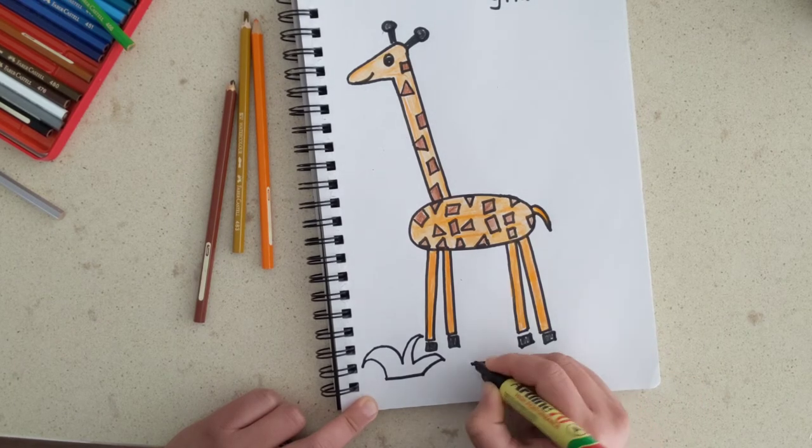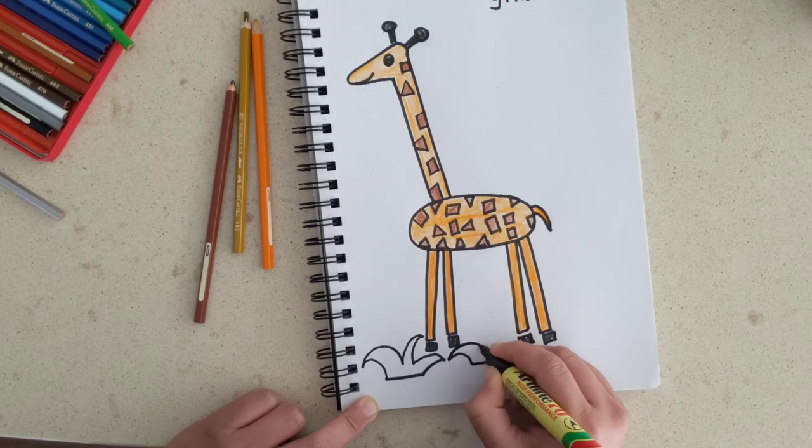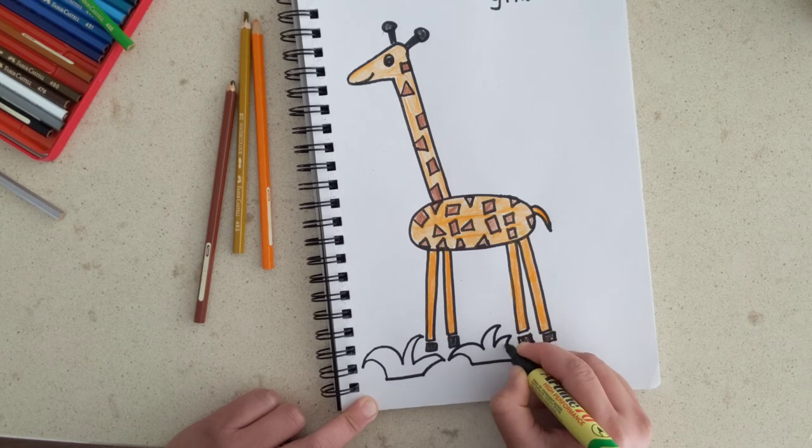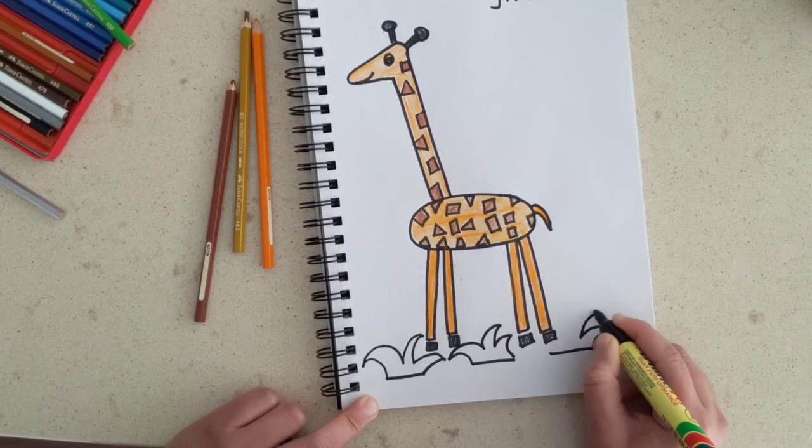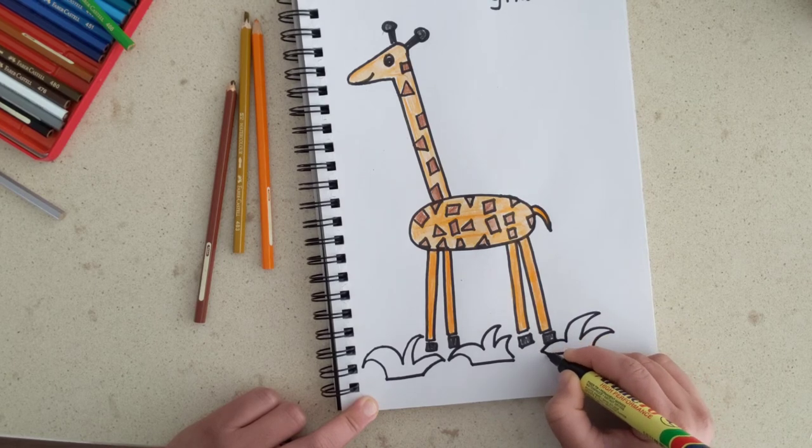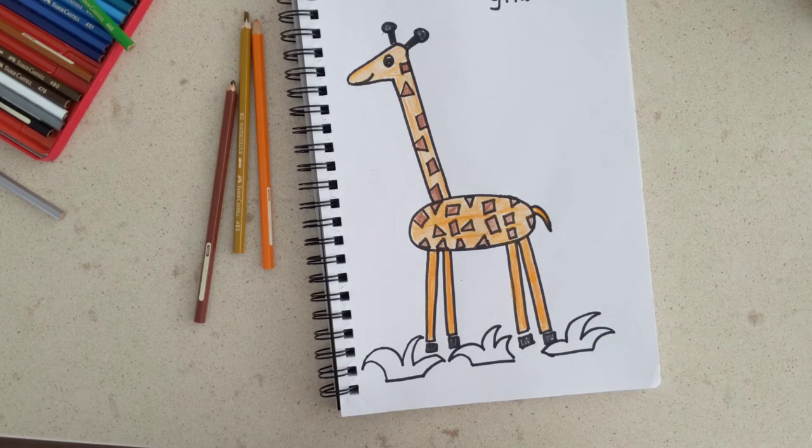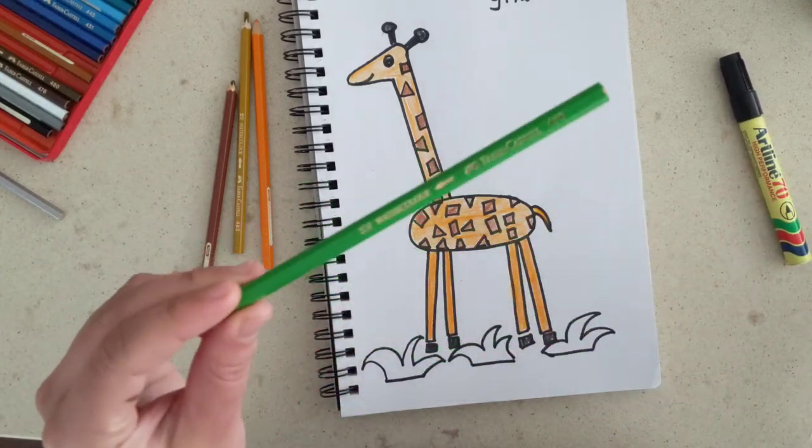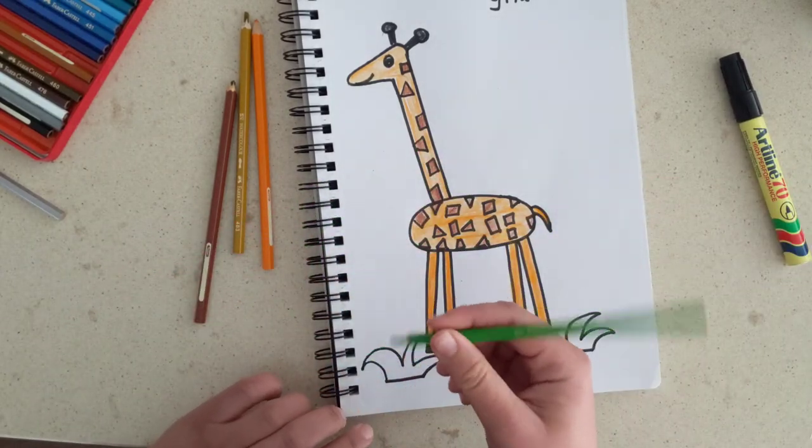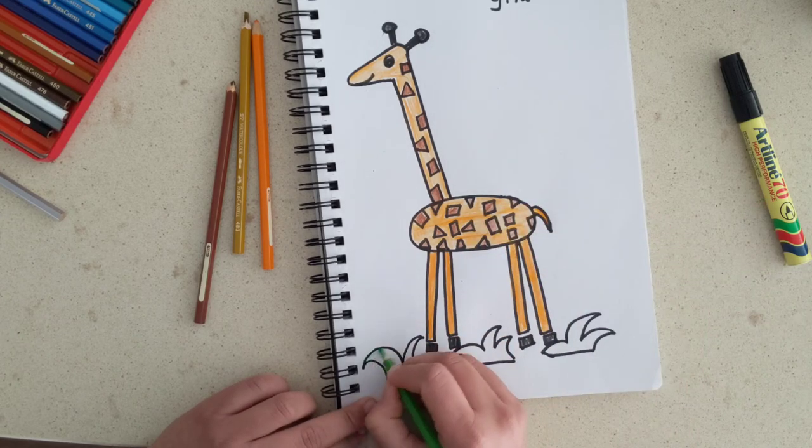Do the same thing here. Curvy lines. This is grass. So we are going to color it in green. You can choose dark green or light green. Today I am going to do light green.